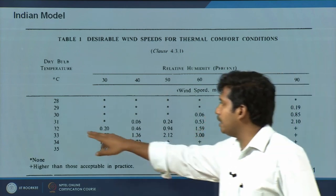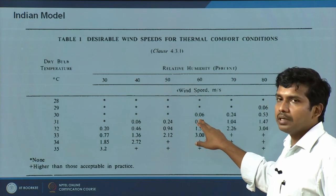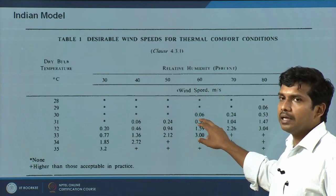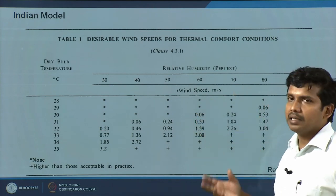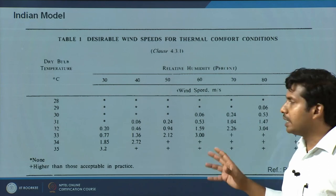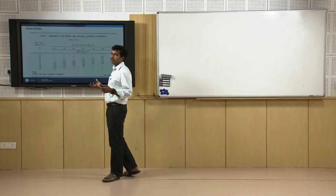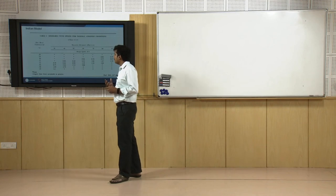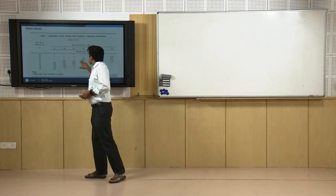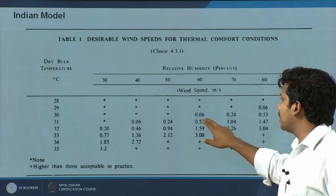For instance, at 30 degrees and 60% relative humidity, the table says 0.06 — you may not need much air movement to be comfortable. Even at 30 degrees and 60% relative humidity, with still air you can still be comfortable. These tests were done for Indian subjects, so the derivations hold good for warm-humid, composite, and hot-dry regions of India.